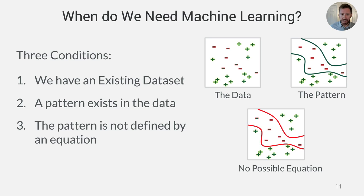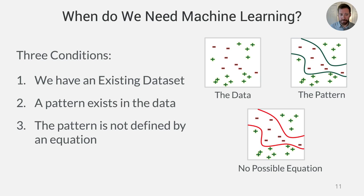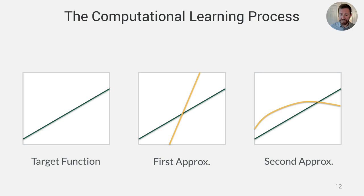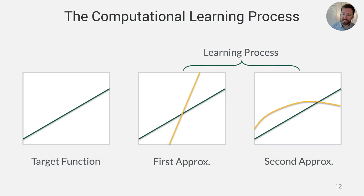Machine learning can be applied when three conditions are met: first, you have an existing dataset; second, there's a pattern in the data useful for some task; and third, that pattern is not easily defined — because if it were, you could just write an analytical program. The computational learning process proceeds by approximating some unknown target function, making better and better approximations until the machine has done a good enough job for our purposes.